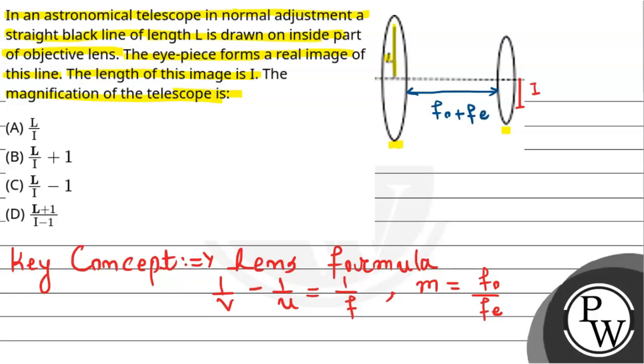the object distance U must equal minus (F_O plus F_E), because on the left side the sign convention is negative, while on the right side the sign convention is positive.